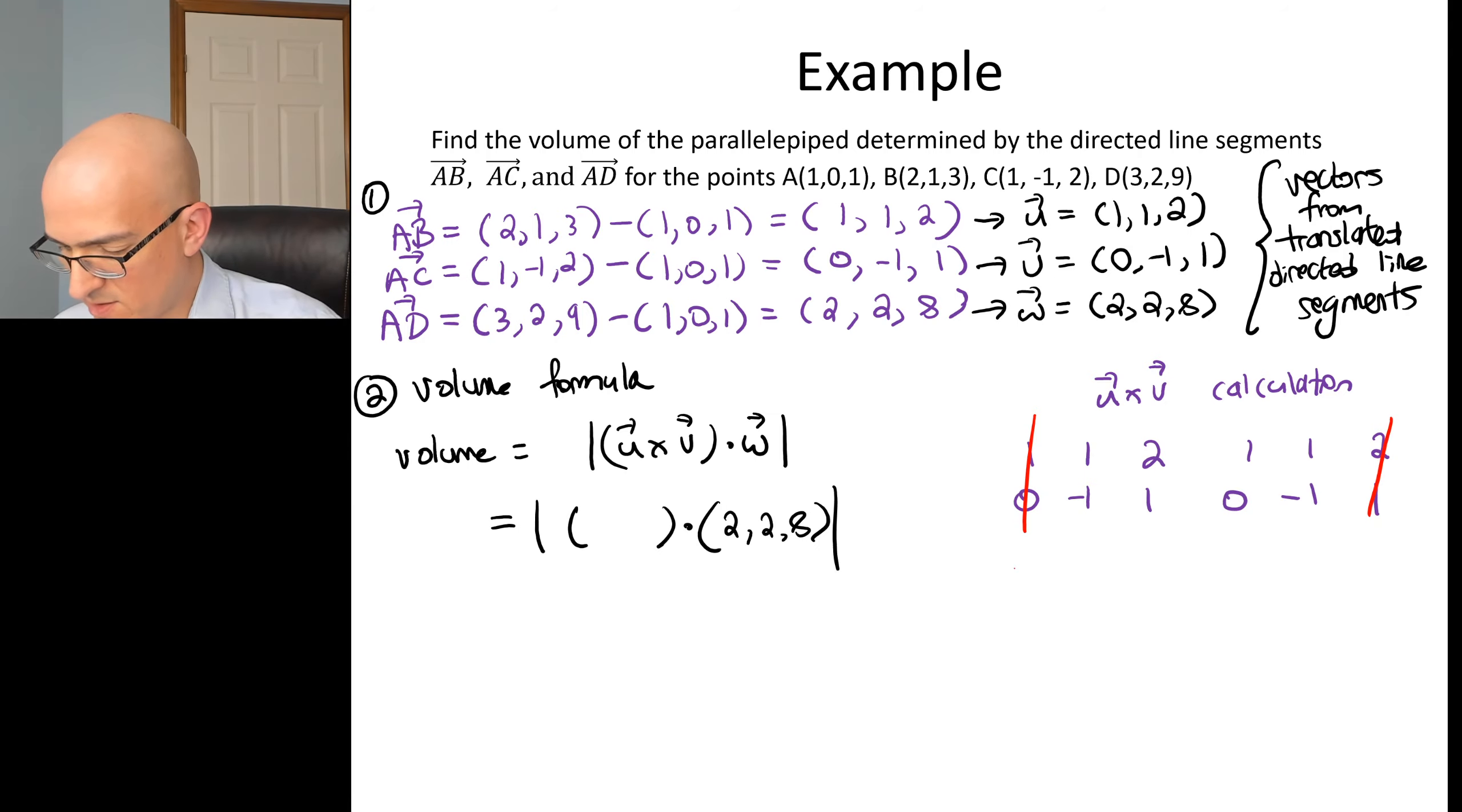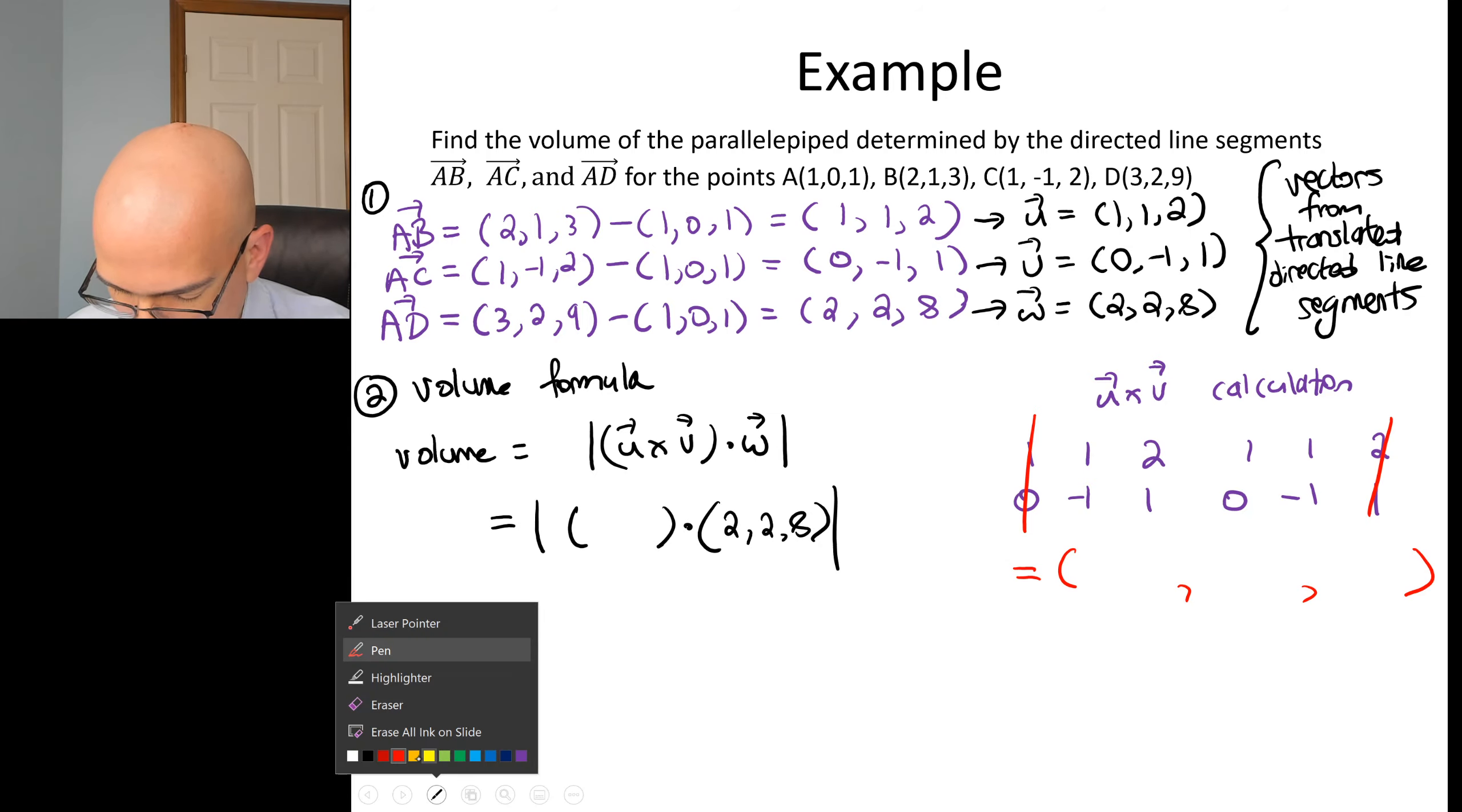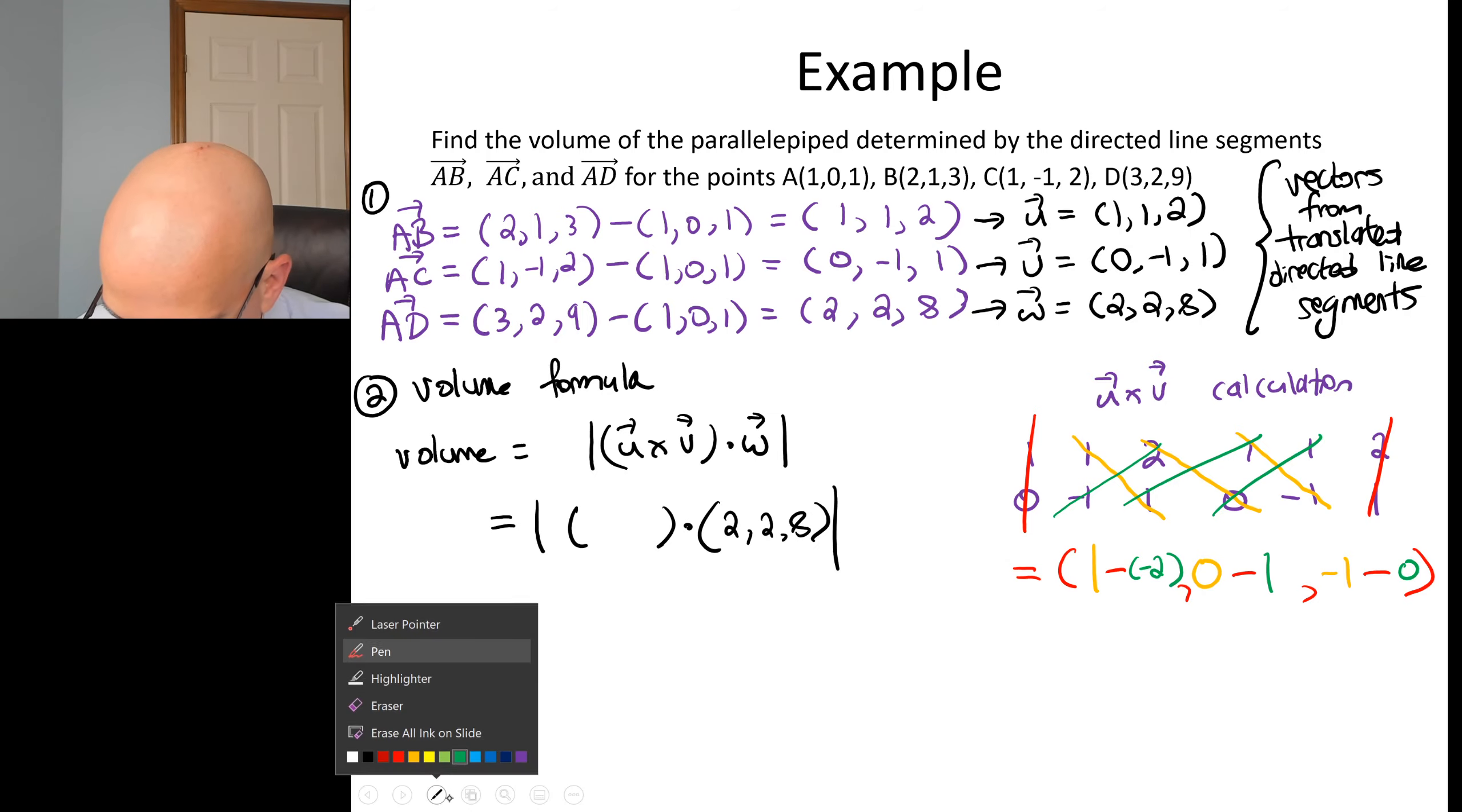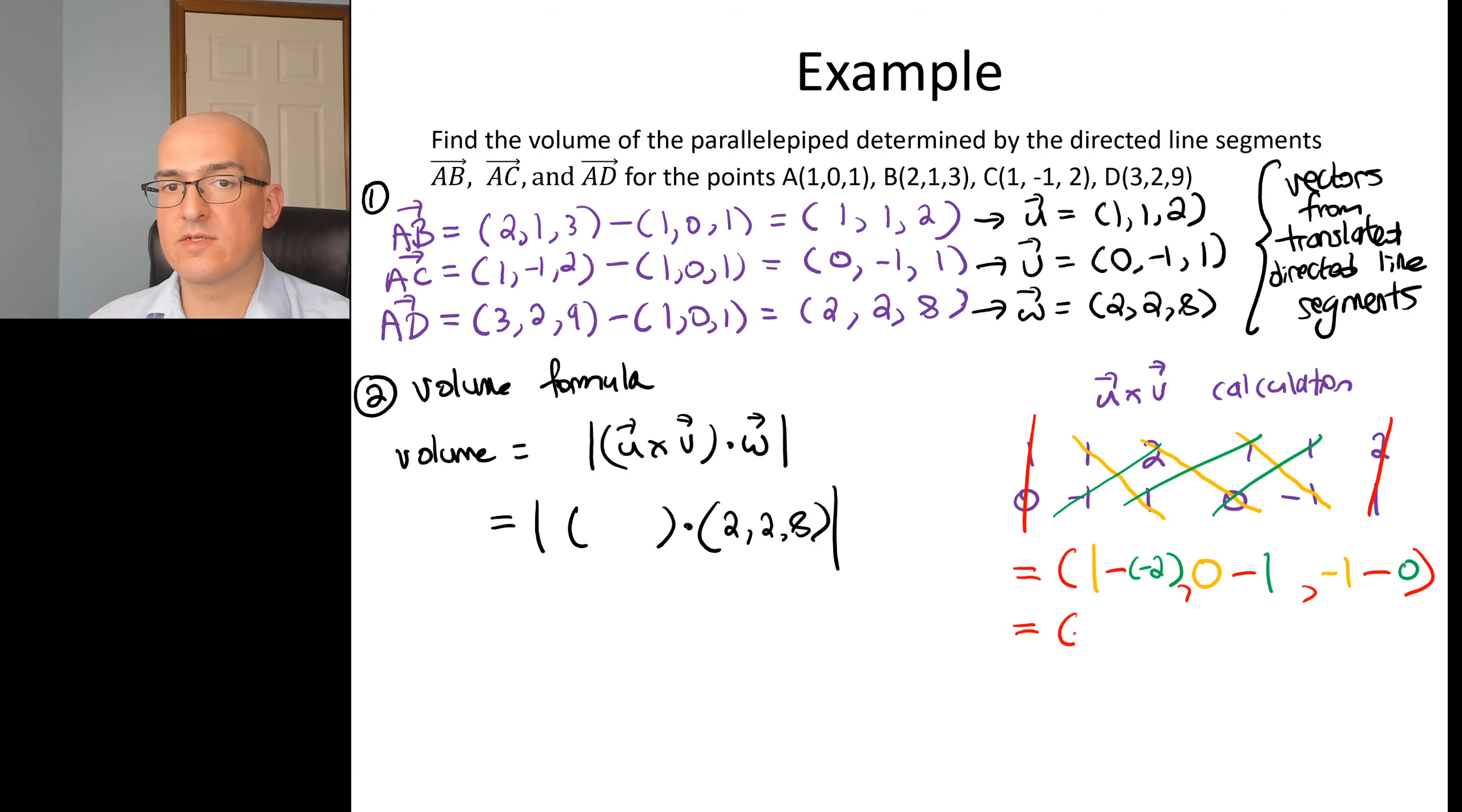And then we're going to have three components. Let's do the down products. 1 times 1, 2 times 0, 1 times negative 1, and then subtract all the up components. Subtract, subtract, subtract. Up component, subtract negative 2. Up component, subtract 1. Up component, subtract 0. And then simplify. So 1 subtract negative 2 is 1 plus 2, which is 3. 0 minus 1 is negative 1. Negative 1 minus 0 is negative 1. So I'm going to take that and transplant that in for U cross V on the left hand side. 3, negative 1, negative 1.